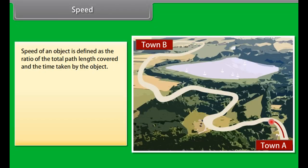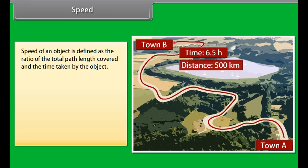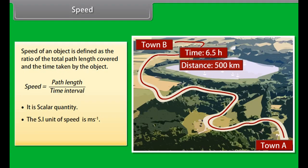Speed: The speed of an object is defined as the ratio of the total path length covered to the time taken. Therefore, speed = path length / time interval. It is a scalar quantity. Its SI unit is m·s⁻¹, and its dimensional formula is M⁰L¹T⁻¹.